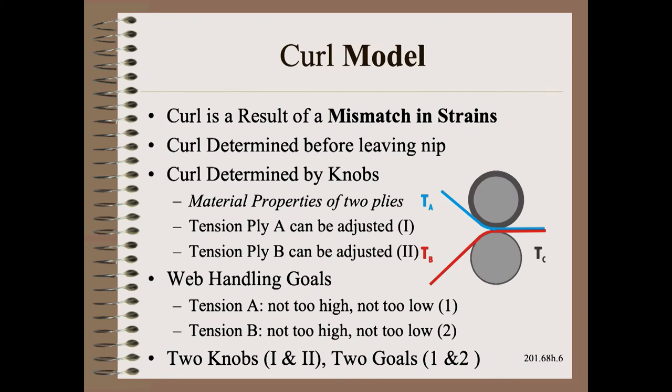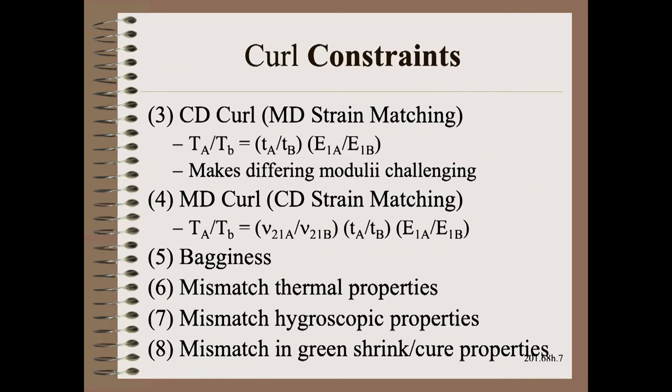We can model curl caused when two materials are being bonded together. This is covered in great detail in my Web 101 class and elsewhere. We also can, and should, list the goals or constraints to make sure that the number of goals do not exceed the number of degrees of freedom. I teach how to do this in my Web 101 class as well as in my industrial problem solving courses such as the Web 401 series here on this all-web-handling YouTube channel.